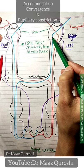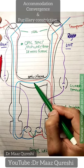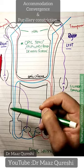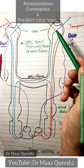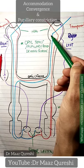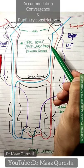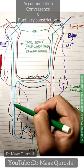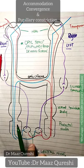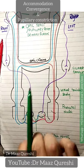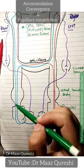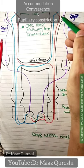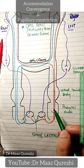The nasal retina information crosses over to the other side. If you have left nasal retina information, that goes to the right optic tract and the right lateral geniculate body, then the right pre-tectal nucleus.